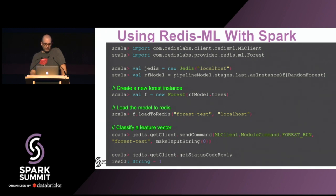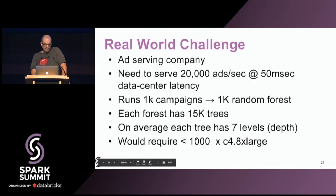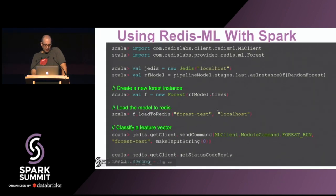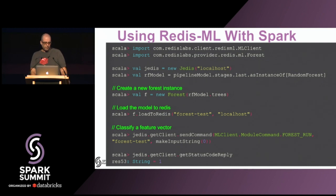Here's how you do it with Spark. Jedis is a popular open source Redis client — you just initialize that. You create the forest; all this is basic Spark. We forked Spark to better integrate, but the training process is identical. You train your forest, then load that module into Redis instead of saving it elsewhere. Then you just send the command 'forest run', the name of the forest, and an input vector, and get the classification. As you can see, it's pretty basic — reading data and training remains the same; what changes is just the persistence into Redis from Spark.